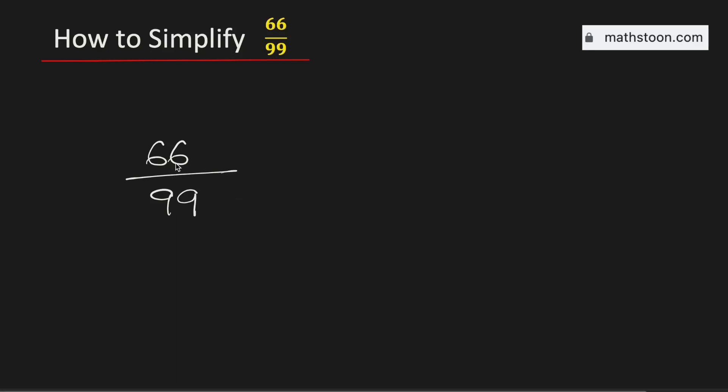To simplify the fraction 66 over 99 in its simplest form, we will divide both these numbers by their common divisors.